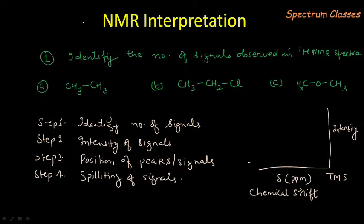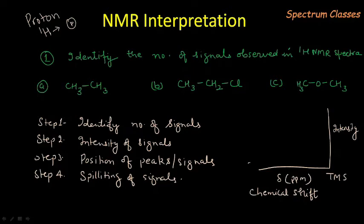Hello everyone, welcome to Spectrum Classes. Today in this video, we are going to discuss about the proton NMR. What is called proton? Proton means 1H. We call it proton because in this 1H nucleus, we are having simply one proton and no neutrons are there. So we call it as proton. Here we are going to interpret the proton NMR spectrum.